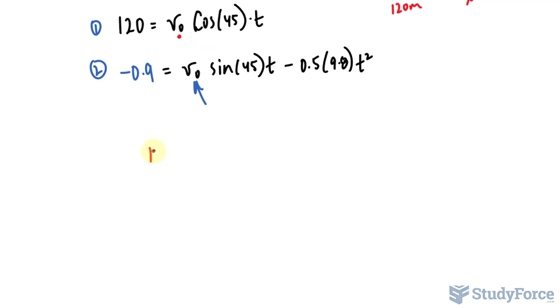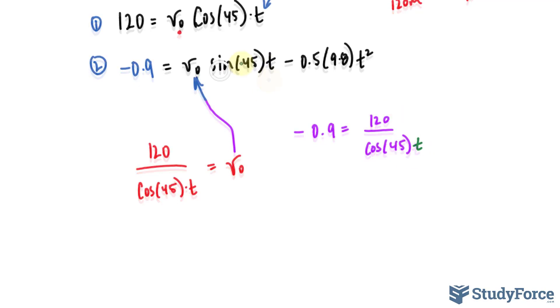If you do that correctly, it should look like this. You should have 120 over cosine 45 times t is equal to the initial velocity. And now, I will take this and place it into there. So this is how you solve an equation simultaneously, much the same way you do with linear systems. So, I have negative 0.9 is equal to 120 over cosine 45t. Then we have sine 45 times t. This t and this t will cancel out. Notice that this t is at the top and that's at the bottom. Minus, these two multiplied make negative 4.9t squared.